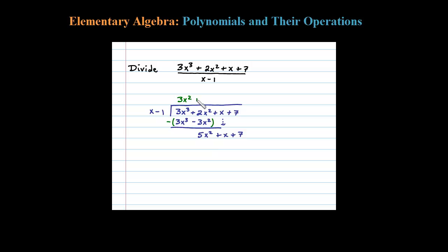After a little bit of thought I'm going to use plus 5x. 5x times x is 5x squared, and then 5x times minus 1 is minus 5x, after which you then subtract. When I subtract here, 5x minus 5x is 0.